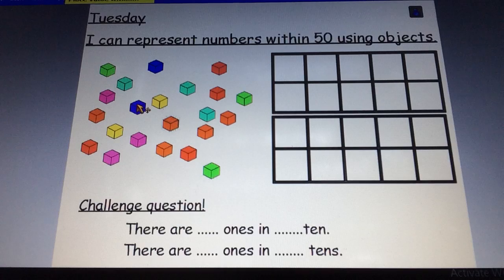1, 2, 3, 4, 5, 6. Did I count that one already? I think I might have done. 7, 8. Oh dear, I'm finding this really tricky to count and see how many I have in total. What do I need to do? What would you do?